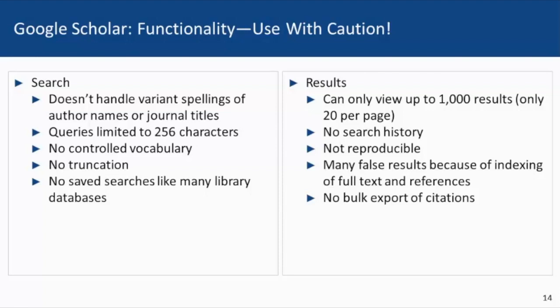Scholar does not have a controlled vocabulary, nor does it allow for truncation. You also cannot save your searches as you would with a database such as PubMed or Web of Science. You can only view 20 records per page and up to a thousand results in total. Unlike databases studied earlier in this class, Scholar does not have a search history, nor are your searches reproducible — results vary from day to day. There are also false results due to misindexing of references, and if you wish to import citations to a bibliographic management software such as RefWorks or Mendeley, you must do so one record at a time.